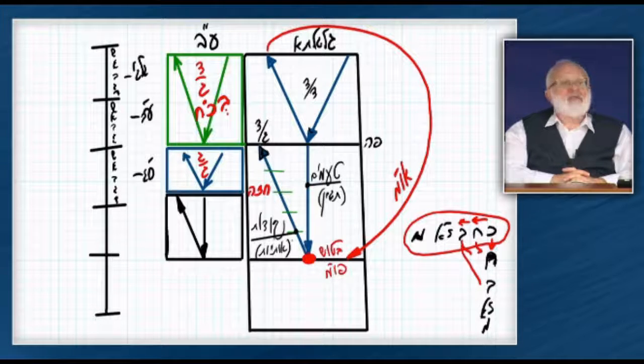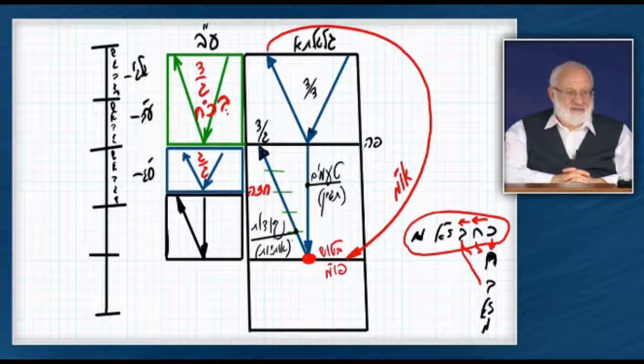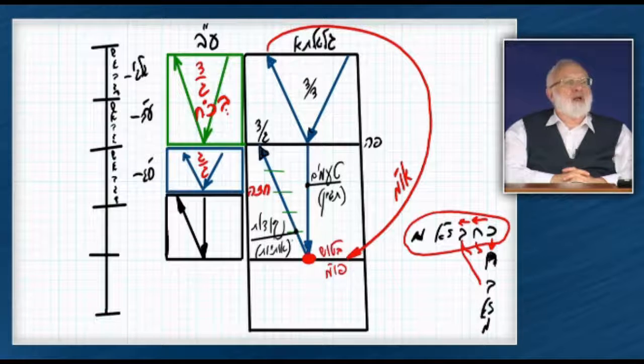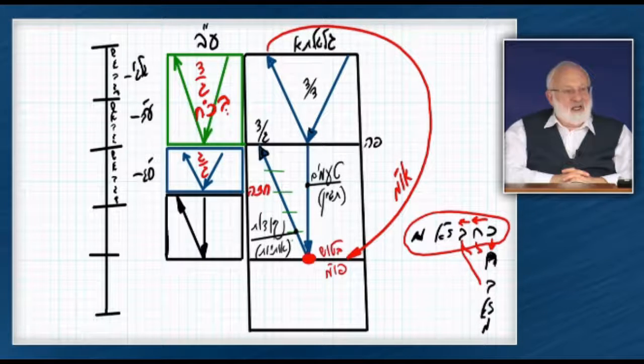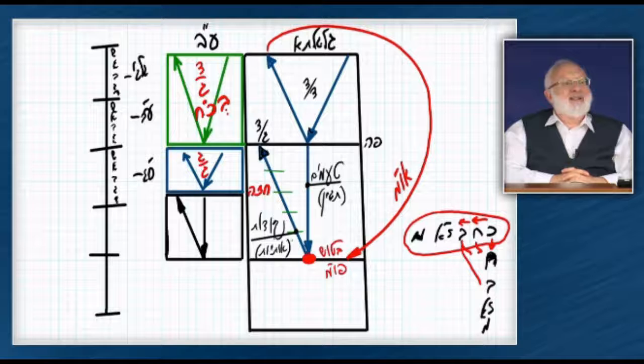He also has Dalet and Ab, but it spreads from below upward. It doesn't receive it. He pushes it away.